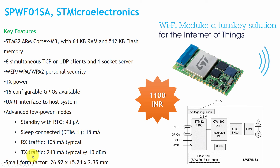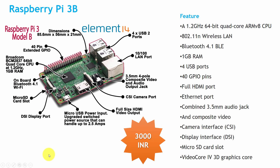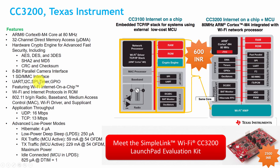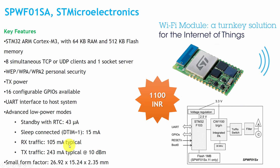For comparison, the CC3200 Texas Instruments board has deep sleep power consumption of 250µA, receiver mode consumes around 59mA, and transmission mode consumes 229mA. You can compare these two boards directly.